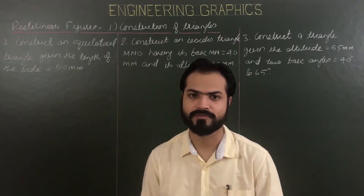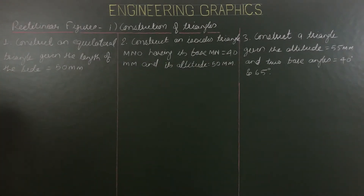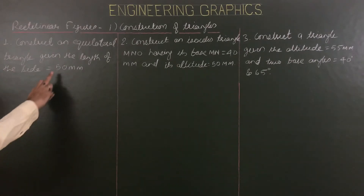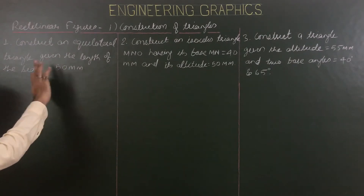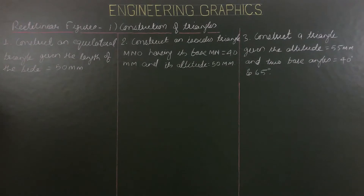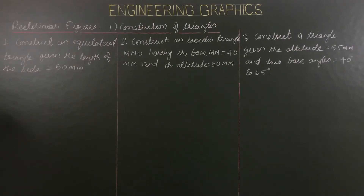Let's begin with the first problem. Construct an equilateral triangle given the length of the side equals 50 mm. So in this first question, the side is 50 mm and it's an equilateral triangle. We know that for an equilateral triangle all three sides are equal in length, so all three sides will be 50 mm.